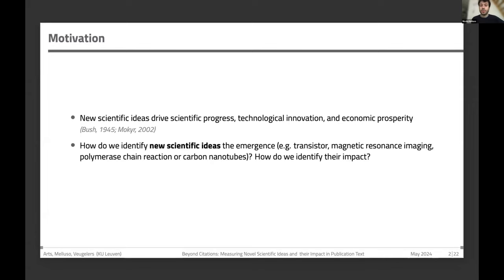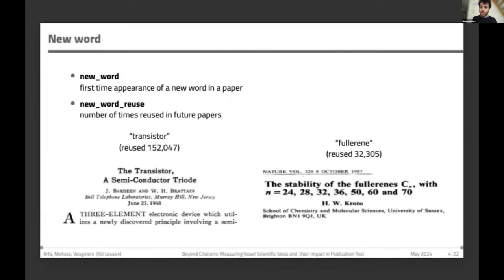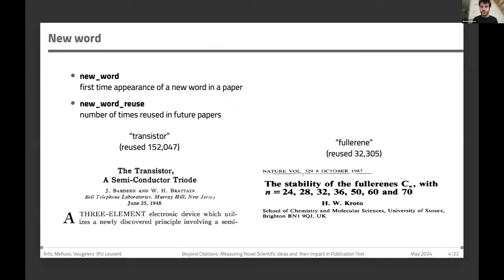For example, it's hard to overstate the importance of inventions or discoveries such as the transistor, MRI, the polymerase chain reaction, or carbon nanotubes. The main idea of this work is to use natural language processing to harness the scientific content of publications. Building on philosophers of science such as Kuhn, scientific ideas are embedded in text. We identify the first paper introducing for the first time a new word, and then identify the number of times these ideas are reused. For example, we identify the first paper introducing the word 'transistor' and how many times it has been used in future papers, as well as the word 'fullerene.'